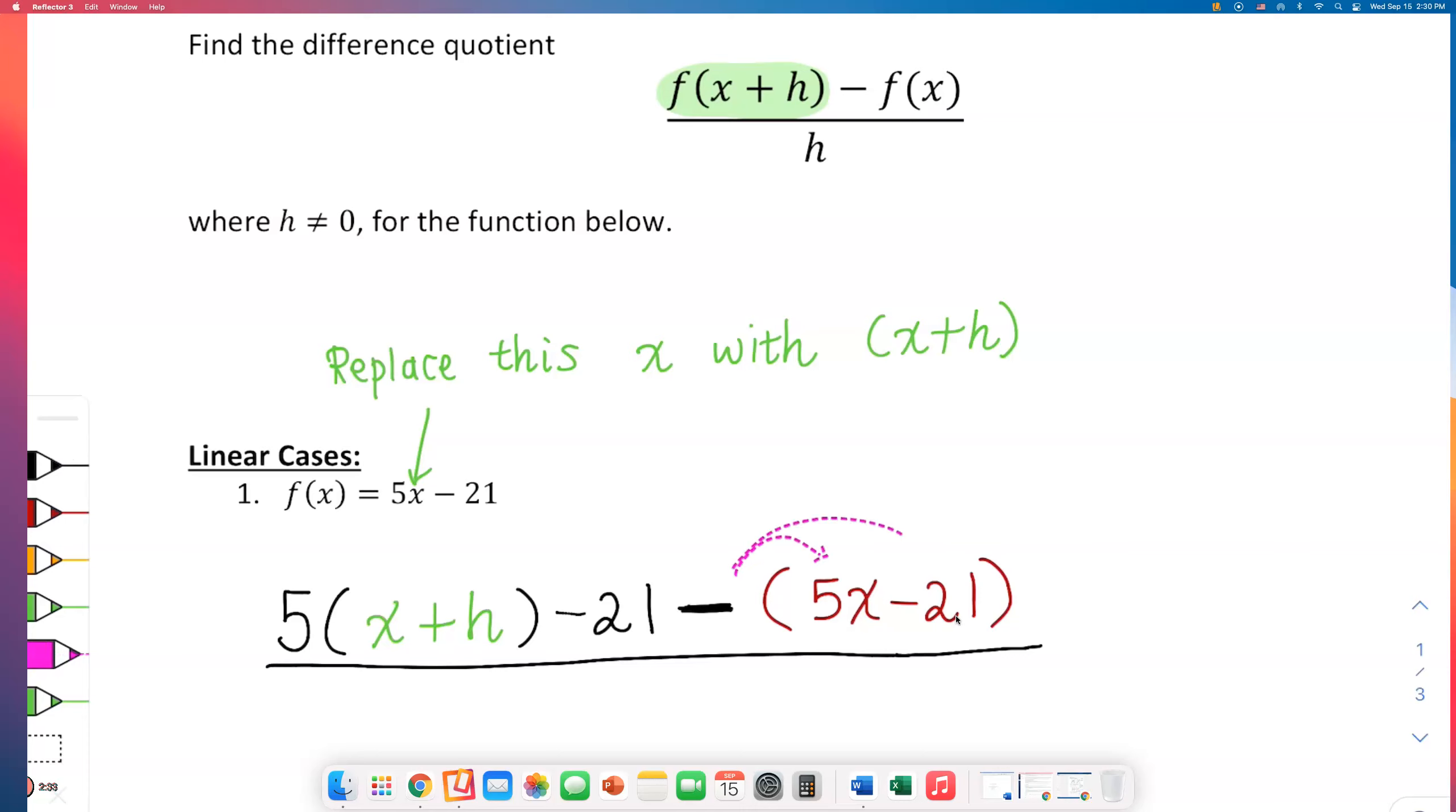I want you to draw these grouping symbols, draw parenthesis around your f of x, because subtracting 5x minus 21 will change the signs. You're gonna have to distribute here. What I highlighted in green is f of x plus h. What I'm highlighting in orange is 5x minus 21, which is f of x. I have to put all this over what letter? h. Setup is done.